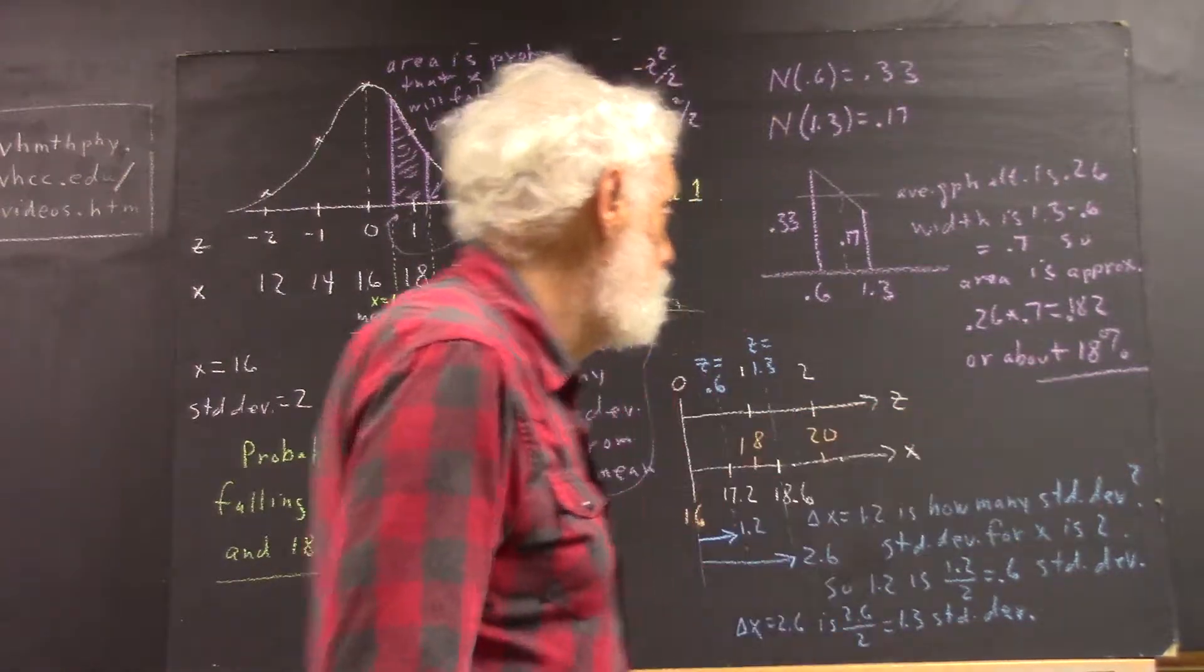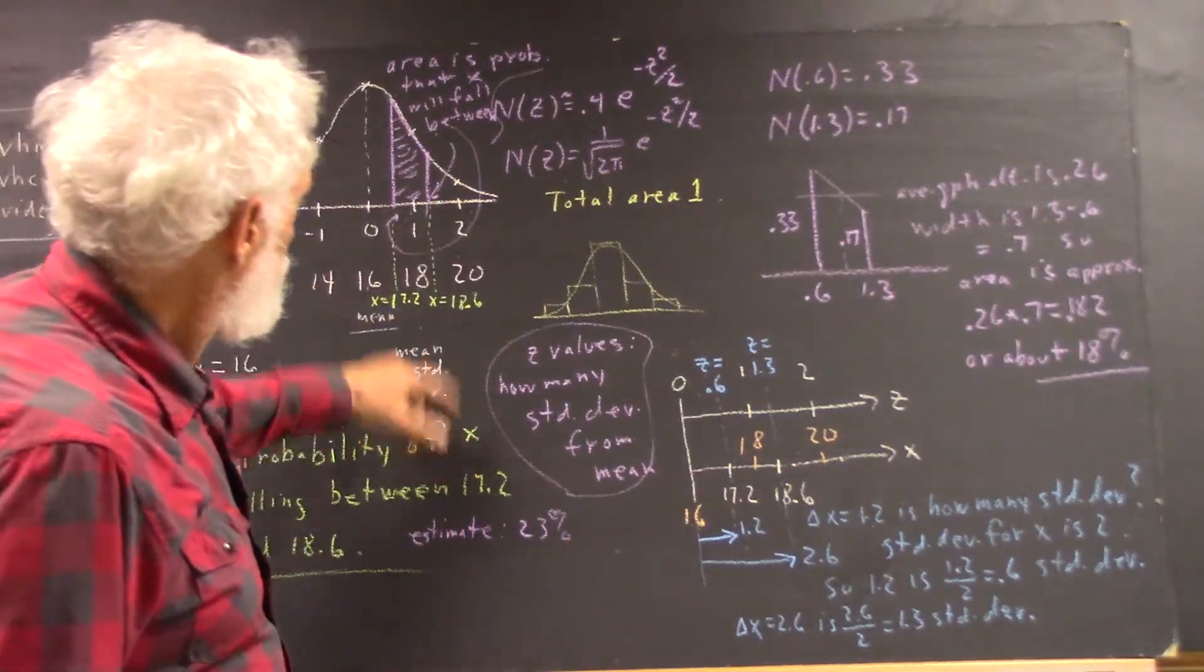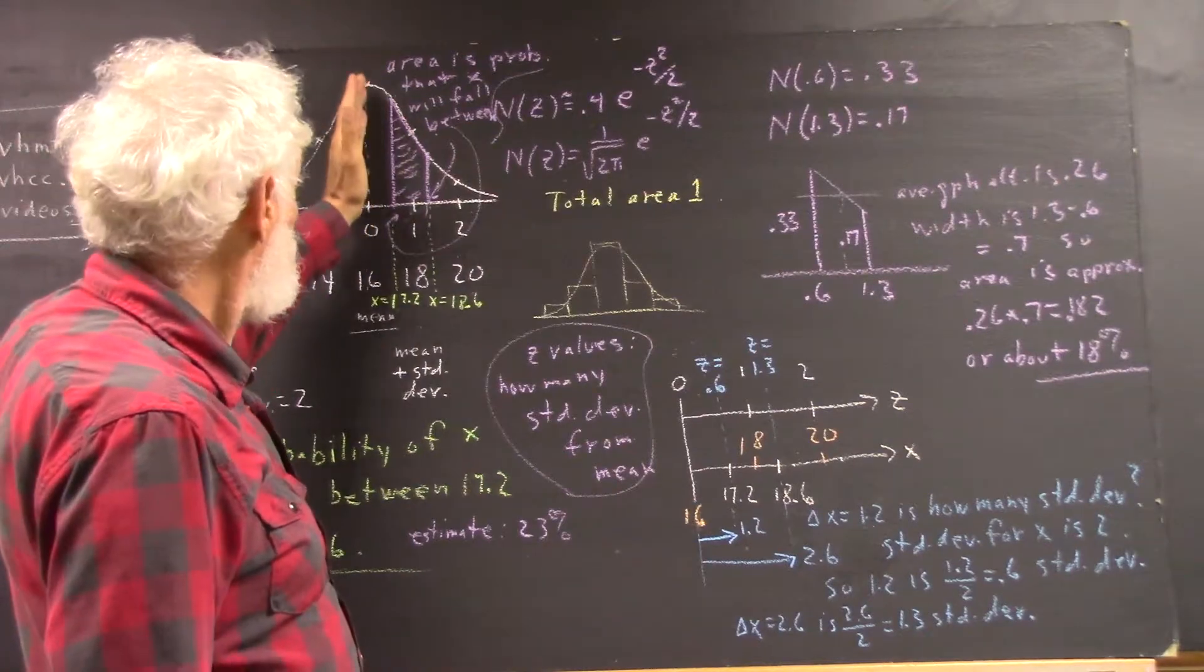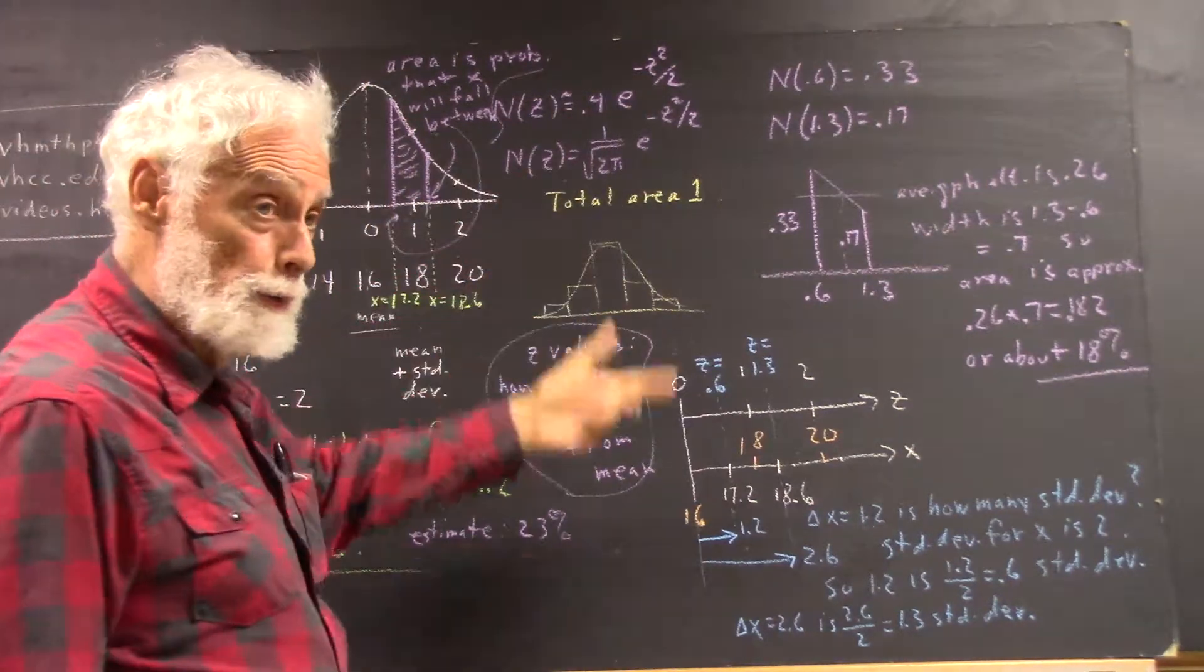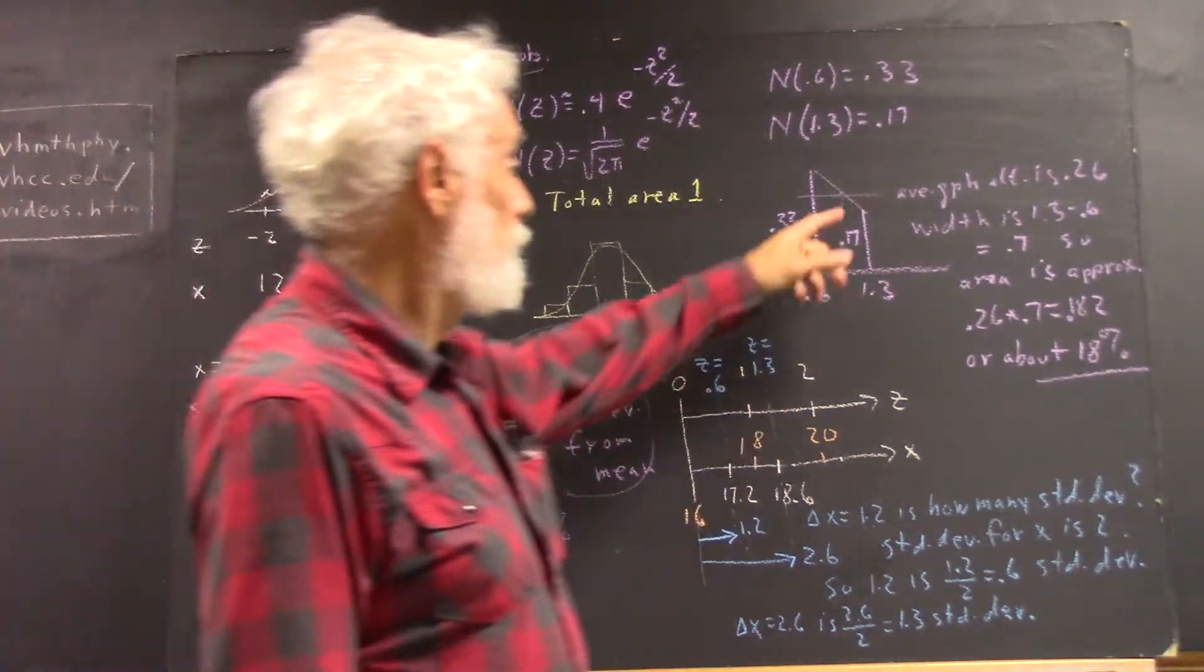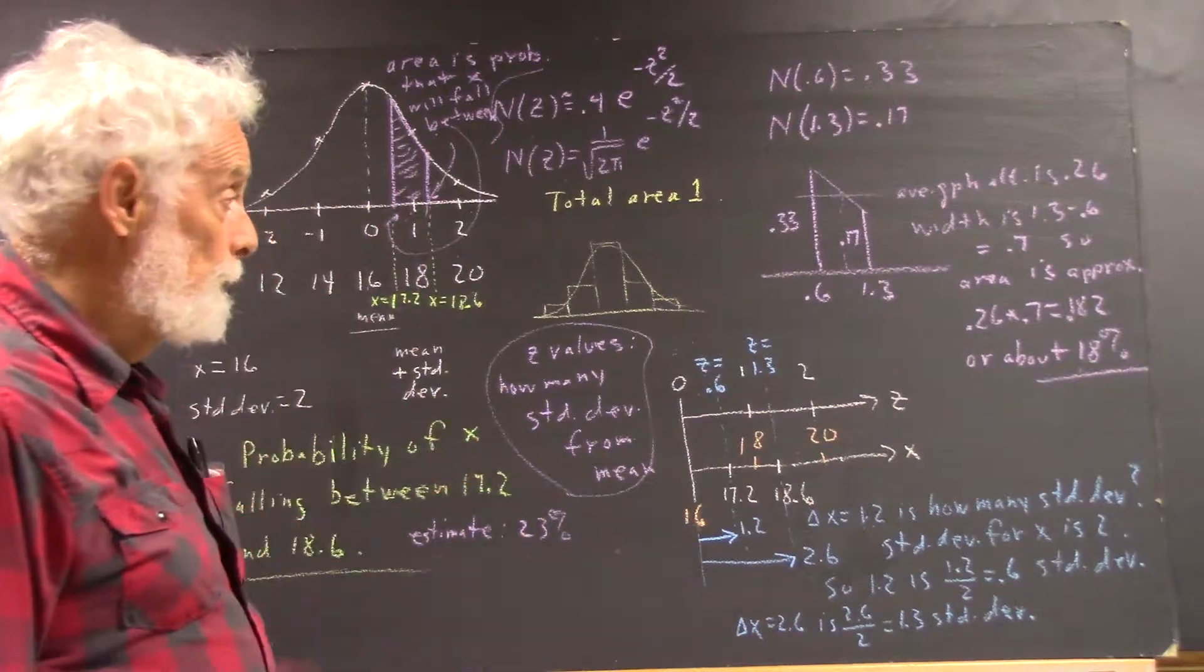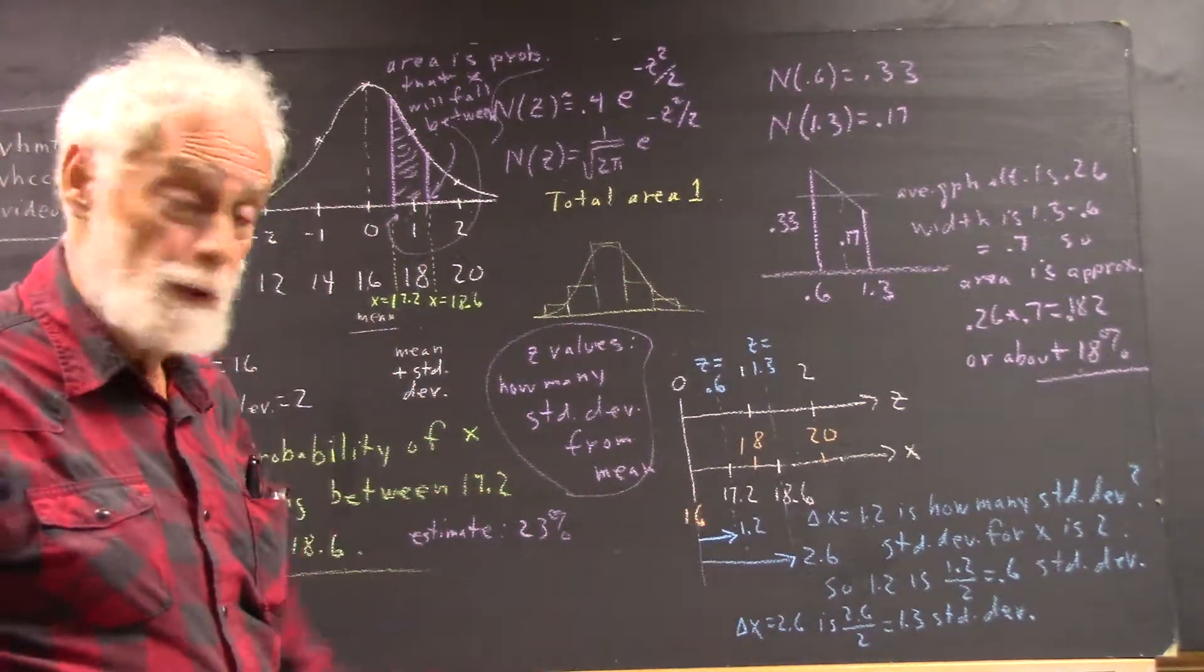Meaning that previously I estimated by ballparking this, this looks like a little less than half of the area on this side of the middle of the curve, and the curve being symmetric from here over is 50%. If this was half of this half, it would be 25%. I decided it was a little lower. I said 23%. My calculation tells me I didn't do a very good job of estimating that. It's really 18%.